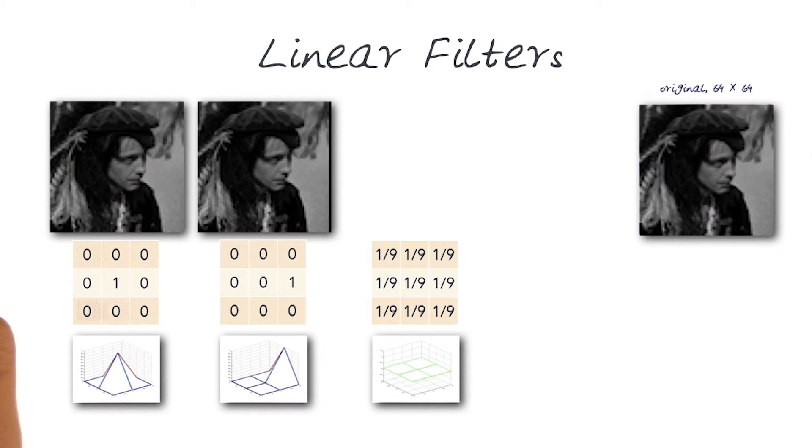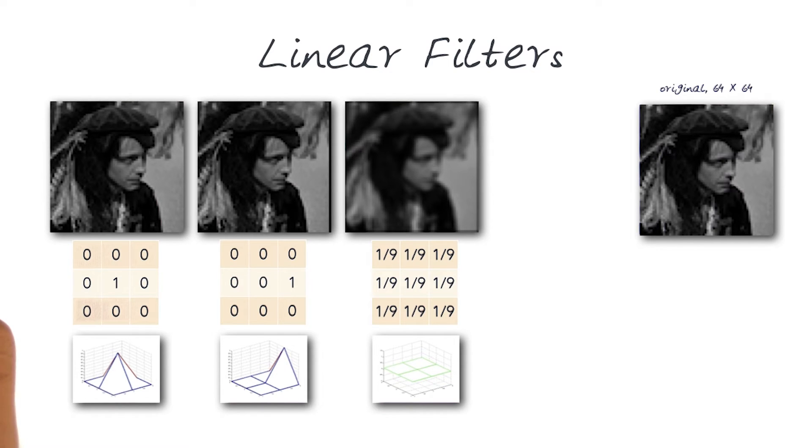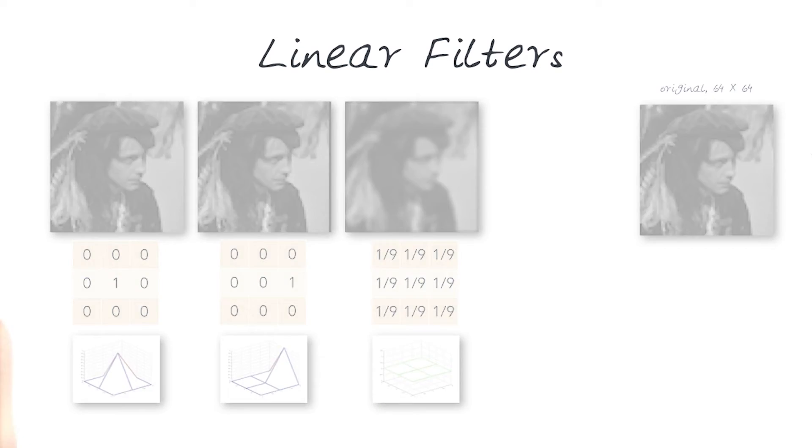This one we've seen many times and again applying a convolution with this one will give us a box blur or an average blur. Let's look at another example. And this will give us examples of how we can combine filters.